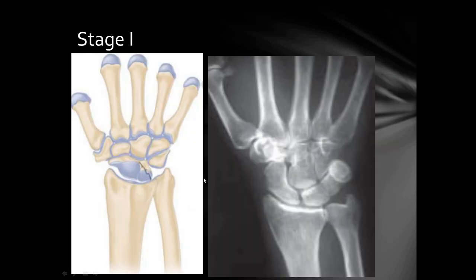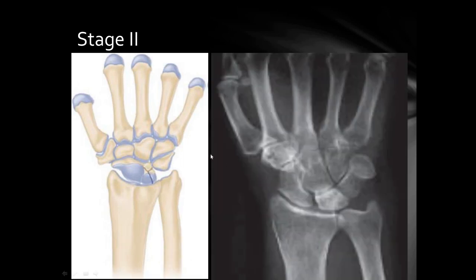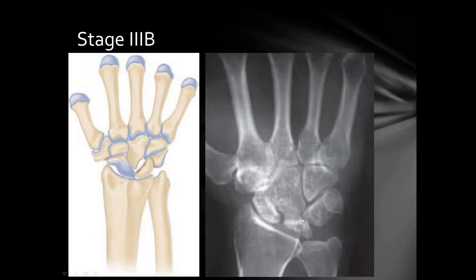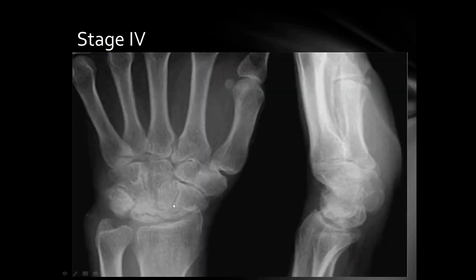Here is Stage 1: the scaphoid and lunate are identified — the patient had dorsal wrist pain but radiologically there is no sclerosis, so this is Stage 1 Kienböck's disease. Here is Stage 2: sclerosis of the lunate is seen but no collapse or fragmentation. In Stage 3A, there is micro-fragmentation and sclerosis, but the scaphoid is not rotated.